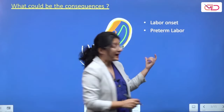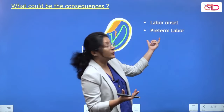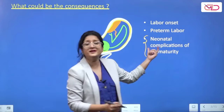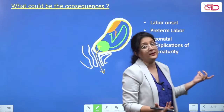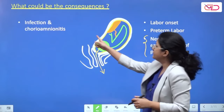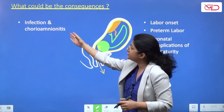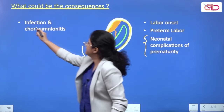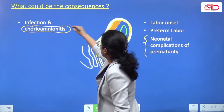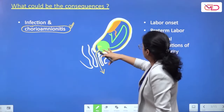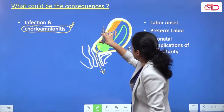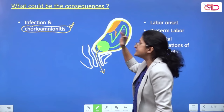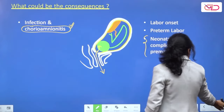If rupture happens preterm, the woman can go into preterm labour with neonatal complications of prematurity. Another consequence is infection and chorioamnionitis. If left unchecked, this can lead to maternal septicaemia. Chorioamnionitis can lead to fetal infection, infection of the decidua, neonatal sepsis, and maternal sepsis.